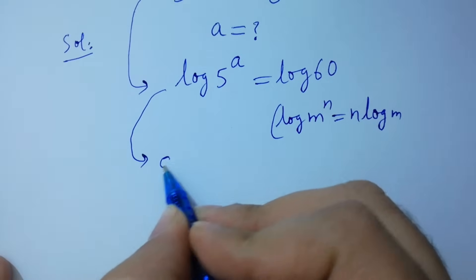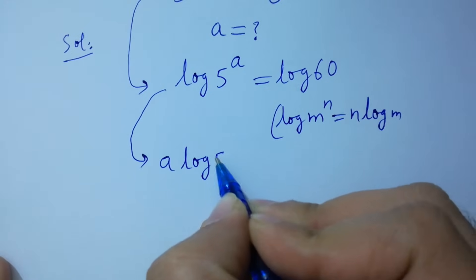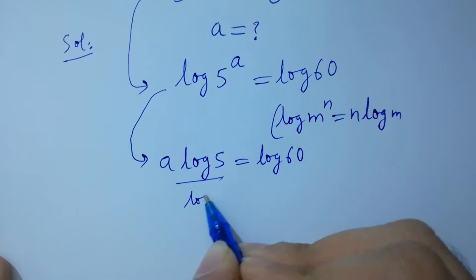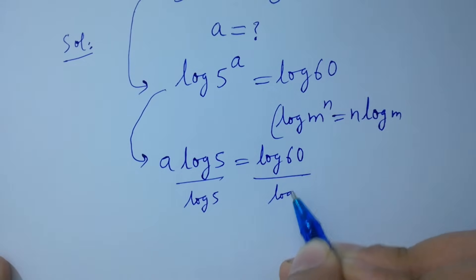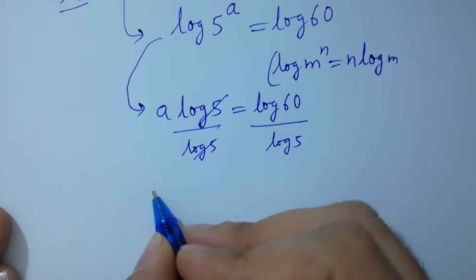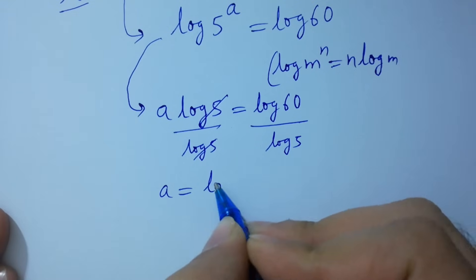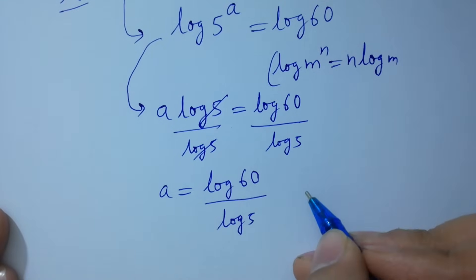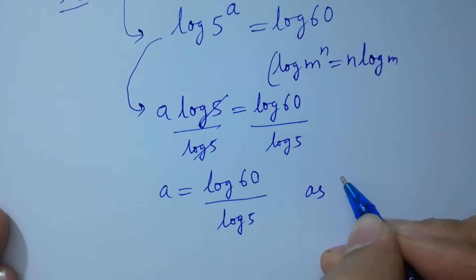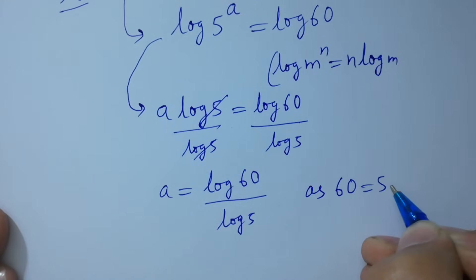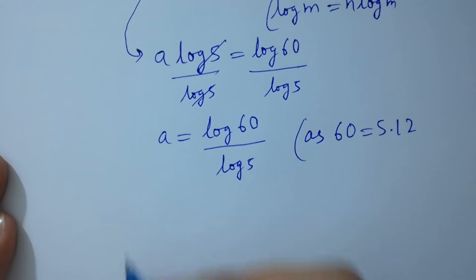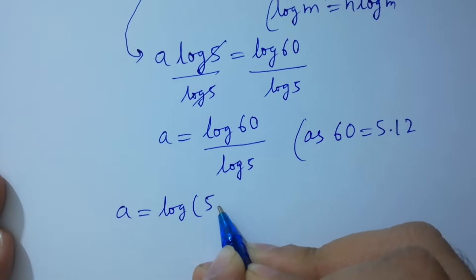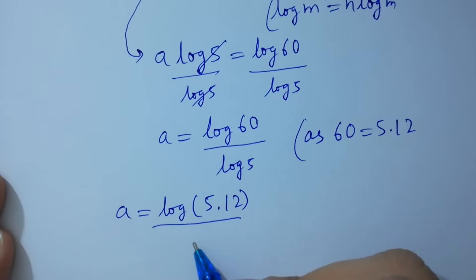We have a log 5 equal to log 60. Divide by log 5 on both sides — log 5 and log 5 cancel. So a equals log 60 over log 5. Since 60 equals 5 times 12, a equals log of 5 times 12, over log 5.